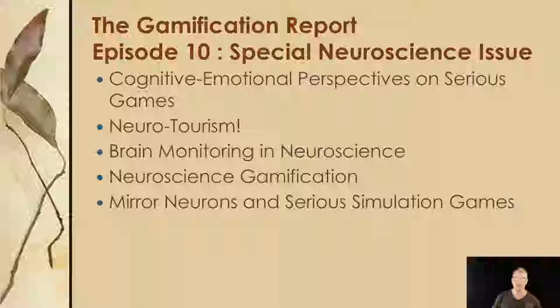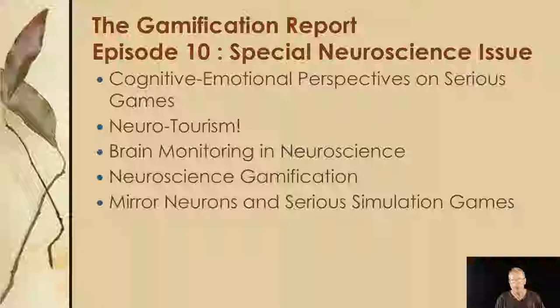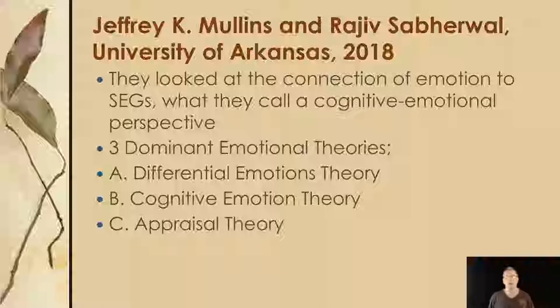Welcome to the Gamification Report episode 10. This is a special issue — we're going to be looking at neuroscience today. We're going to start with some really interesting papers looking at cognitive emotional perspectives in serious games, some material including pre-publication manuscripts. We'll look at neurotourism, brain monitoring and neuroscience, neuroscience gamification, and mirror neurons in serious simulation games. We start with a paper by Jeffrey K. Mullins and Rajiv Saberwal at the University of Arkansas, 2018.